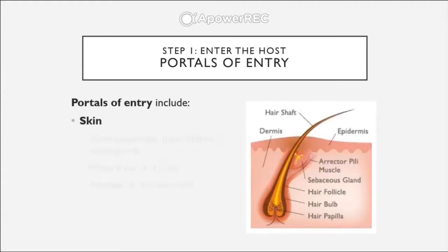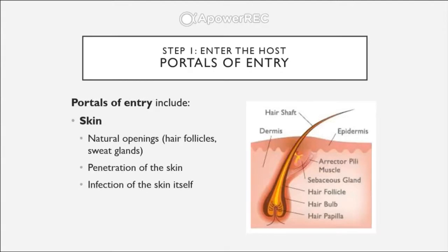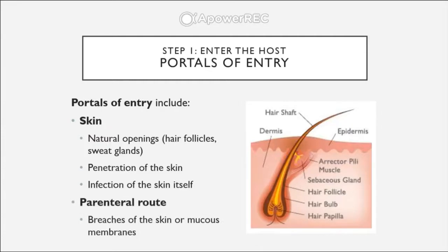Next is the skin. The skin has natural openings which have hair follicles, sweat glands, and sebaceous glands. You can have a portal of entry by penetration of the skin itself, or through the parenteral route. Make sure you're using the definitions we have for this class: the parenteral route is defined as breaches of the skin or mucus membranes — essentially wounds, such as a cut on your skin or a tear in a membrane.